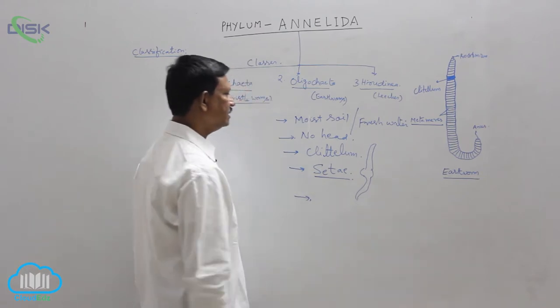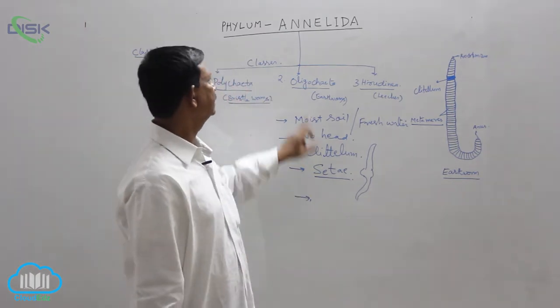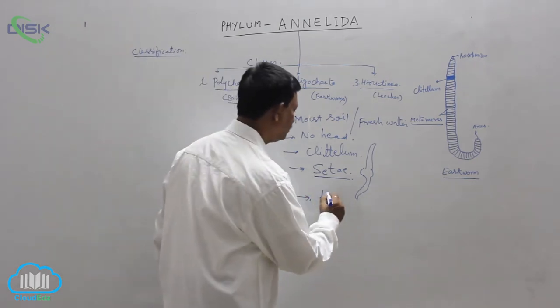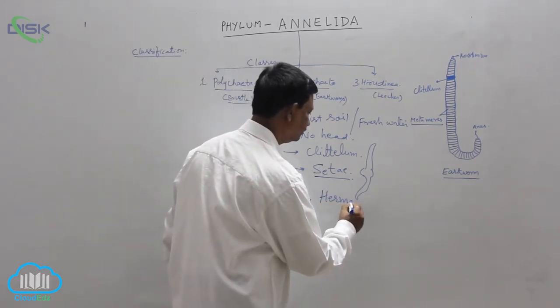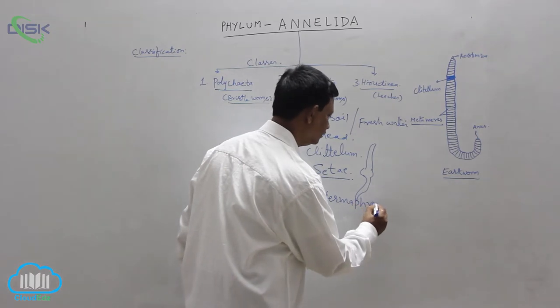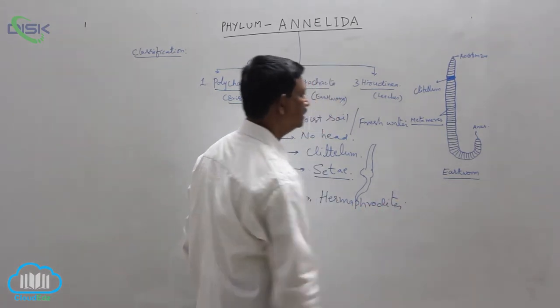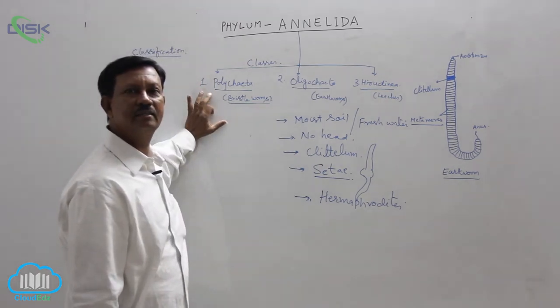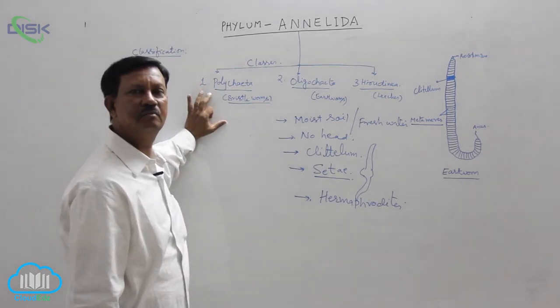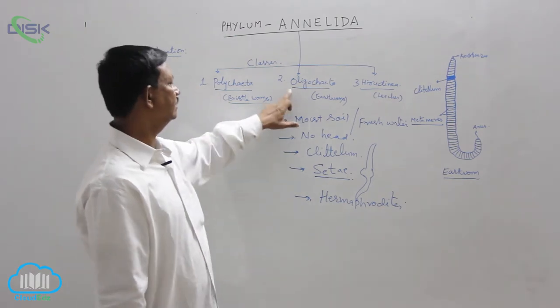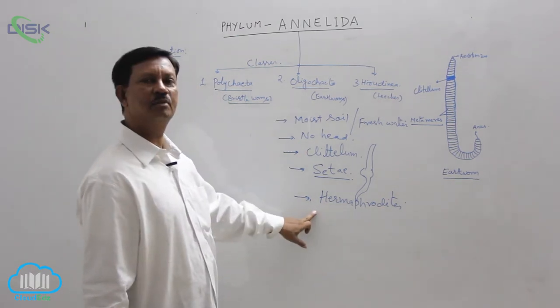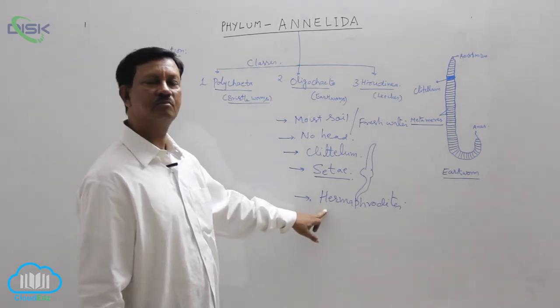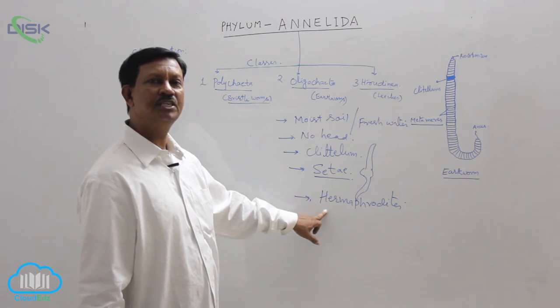Due to the presence of few chaetae in the epidermis, they are known as Oligochaeta. They are hermaphrodites - both male and female reproductive organs are present in the same individual. In Polychaeta, sexes are separate, but here in Oligochaeta, both male as well as female reproductive organs are present in the same individuals. That's why they are known as hermaphrodites or monoecious animals.